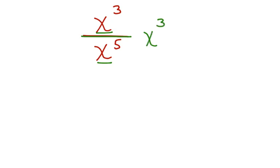In this case, we have x to the 3rd minus 5, and 3 minus 5 gives me x to the negative 2.